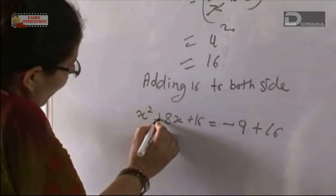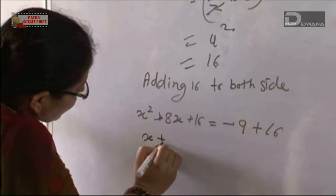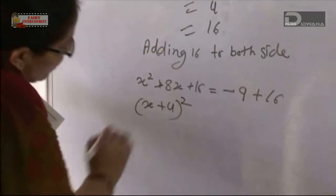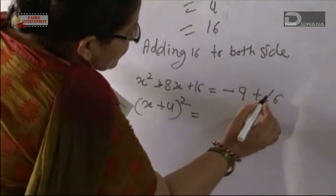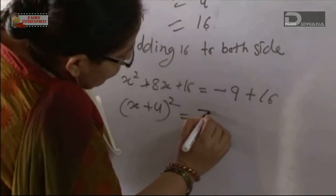So this is the whole square: (x + 4)² = 16 - 9 = 7.